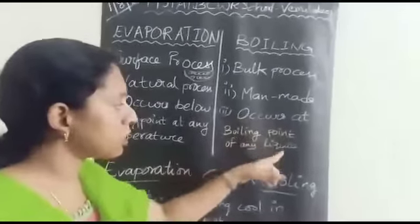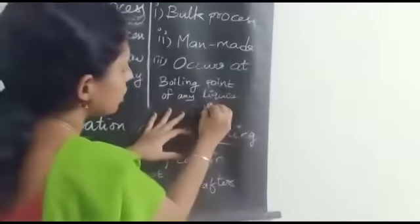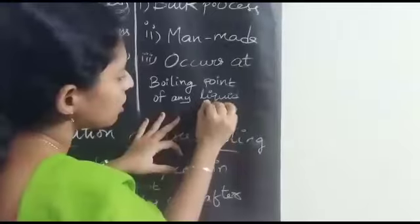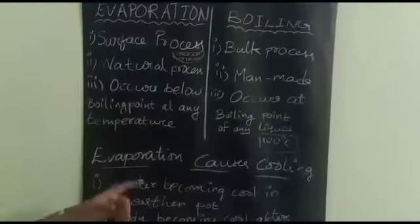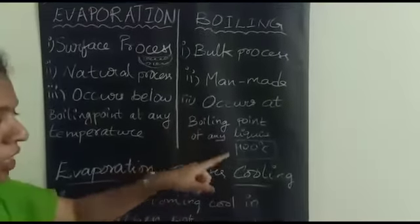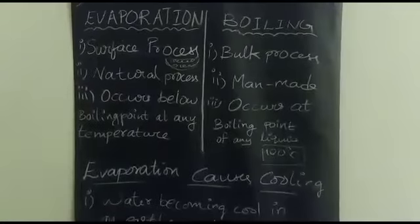But boiling occurs at boiling point. When I say water boils at 100 degrees Celsius, the boiling point of water is 100 degrees Celsius. But evaporation of water occurs at 30 degrees, 40 degrees, 50 degrees, at any degrees due to sun's heat, because it is a surface phenomenon. And boiling occurs at only 100 degrees for water because it is a bulk phenomenon.